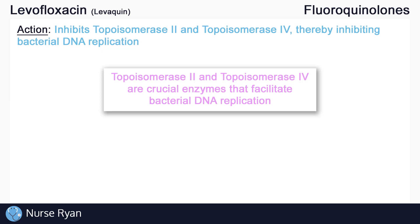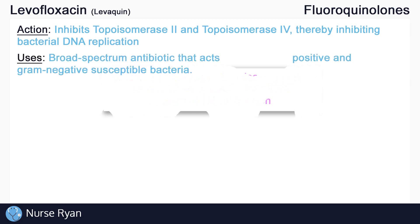That's not the whole story, but it is the gist of it. Fluoroquinolones inhibit the enzymes topoisomerase-2 and topoisomerase-4, thereby inhibiting bacterial DNA replication. So what type of bacteria can fluoroquinolones like levofloxacin work on? Well, levofloxacin is a broad-spectrum antibiotic, which means that it can act on a wide variety of bacterial infections.